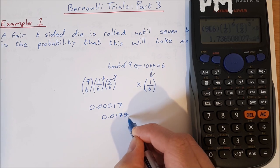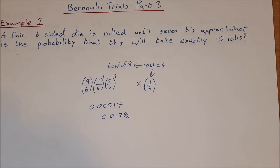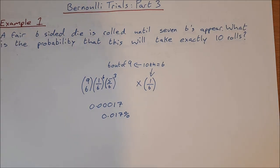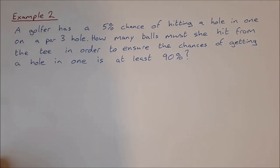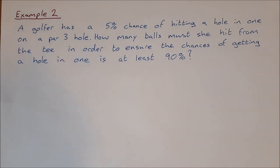So that's approximately 0.017%. The chances of rolling a die ten times and getting the seventh six appear on the tenth roll are 0.017% — very, very small, as you can imagine. Now for another example: for all the golfers out there, a golfer has a 5% chance of hitting a hole-in-one on a par three hole. How many balls must she hit from the tee to ensure the chances of getting a hole-in-one is at least 90%? This is at the upper level of what you could be asked on Bernoulli trials.